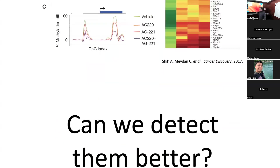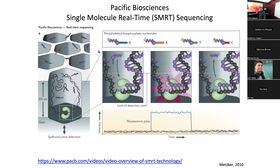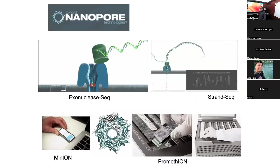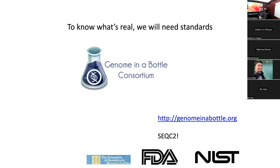Can we also detect modified states better? The answer is definitely yes — you saw the PacBio videos, and this is one of the original papers showing that. New methods need standards — you need a way to adjudicate the accuracy of detecting methylation, hydroxymethylation, and other base state changes. This is where groups like NIST, the FDA, and ABRF come in. There's something called the Genome in a Bottle Consortium, and NIST — the National Institute of Standards and Technology — essentially an entire institute of government that thinks about measurement standards.